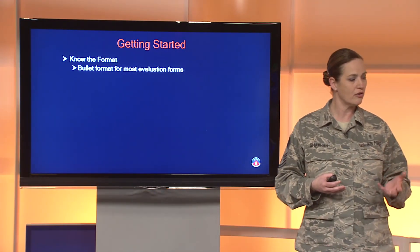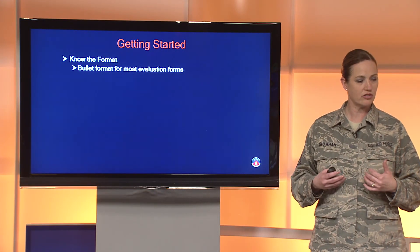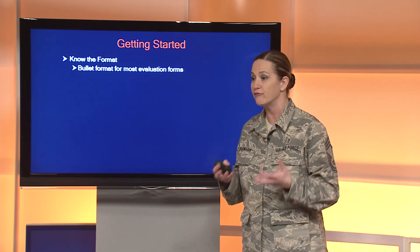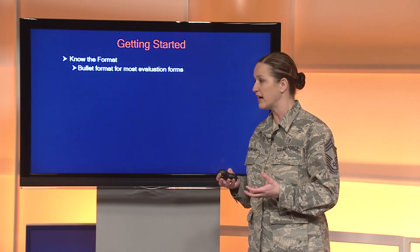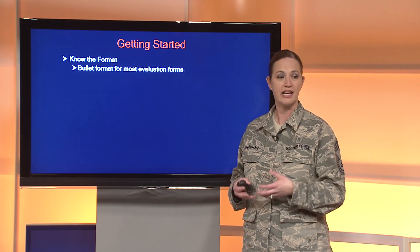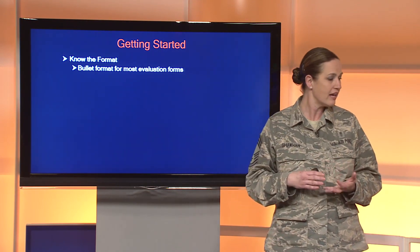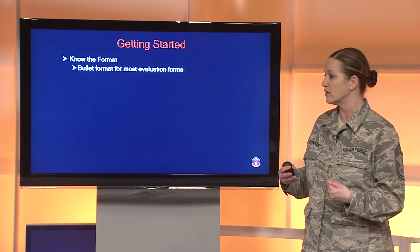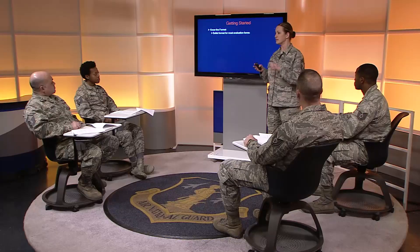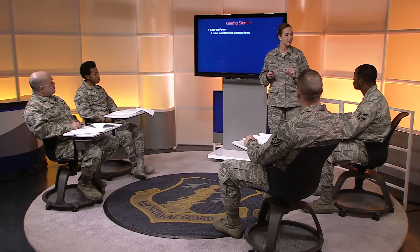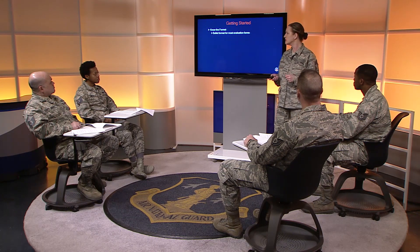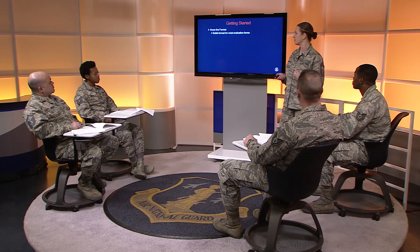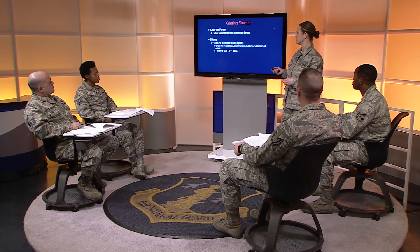One of the things you need to know when getting started is which form you're using and what is required on that form. If you're writing an awards package for an annual award, it's important to know the headings and the minimum number of bullets required. On your EPRs, each section tells you exactly what's supposed to be on there — they made it easy. But this is also an easy way to get things kicked back if you don't follow the correct procedures.